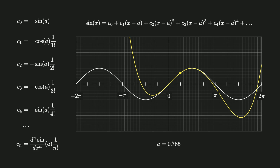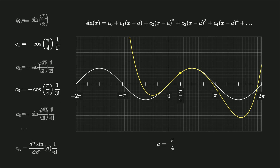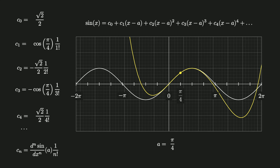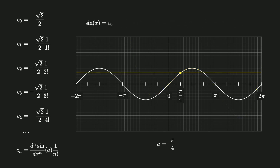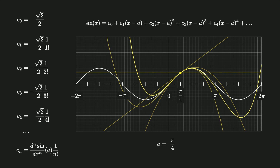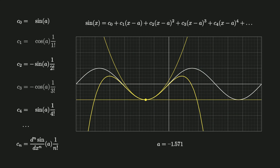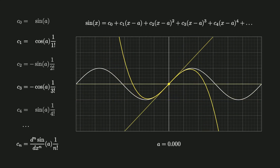Likely choices for sine are inputs where we already know the output for sine and cosine, like the points formed by dividing a full rotation into eight equal parts. For example, to approximate around the point pi divided by 4, evaluate all the derivatives of sine at pi fourths. Sine of pi fourths is equal to the square root of 2 divided by 2, and cosine of pi fourths is also equal to the square root of 2 divided by 2. The coefficient c0 makes it so the approximation has the same output at this point, c1 makes it so the approximation has the same slope, c2 makes it so the approximation has the same second derivative, and so on for all higher order derivatives. Visualizing the Taylor polynomials for sine, we can see how for some points all of the odd coefficients go to zero, and for other points all of the even coefficients go to zero.